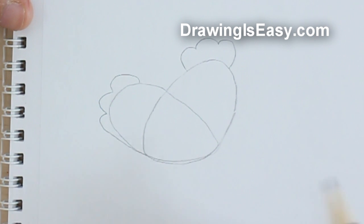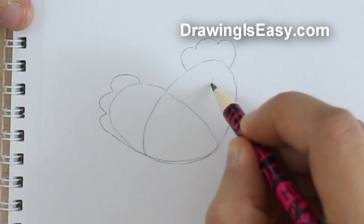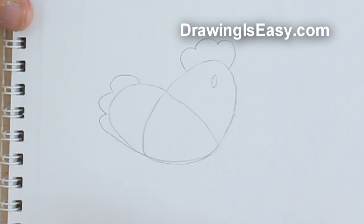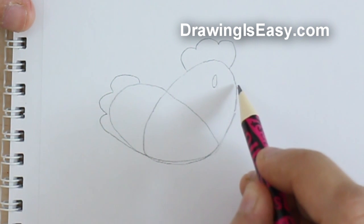Now we will draw the eye of the chicken and then we will draw the beak overlapping on top of the oval.